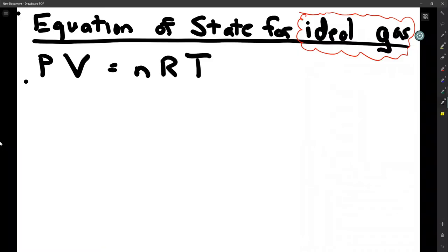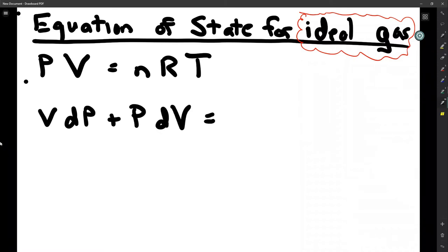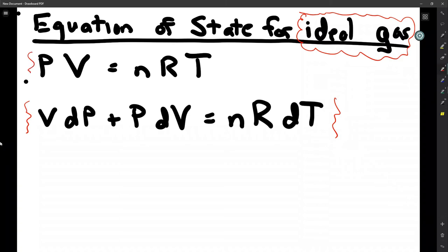For the equation of state, using it in its full differential form is often helpful. For the ideal gas, we take the full differential, which gives V times dP plus P times dV equals nR times dT — since moles of gas and the gas constant don't change in a closed system. We'll make use of this differential form in some examples. Both forms are useful: the full form when you know two variables and need the third, and the differential form when dealing with ongoing changes in pressure, volume, and temperature.